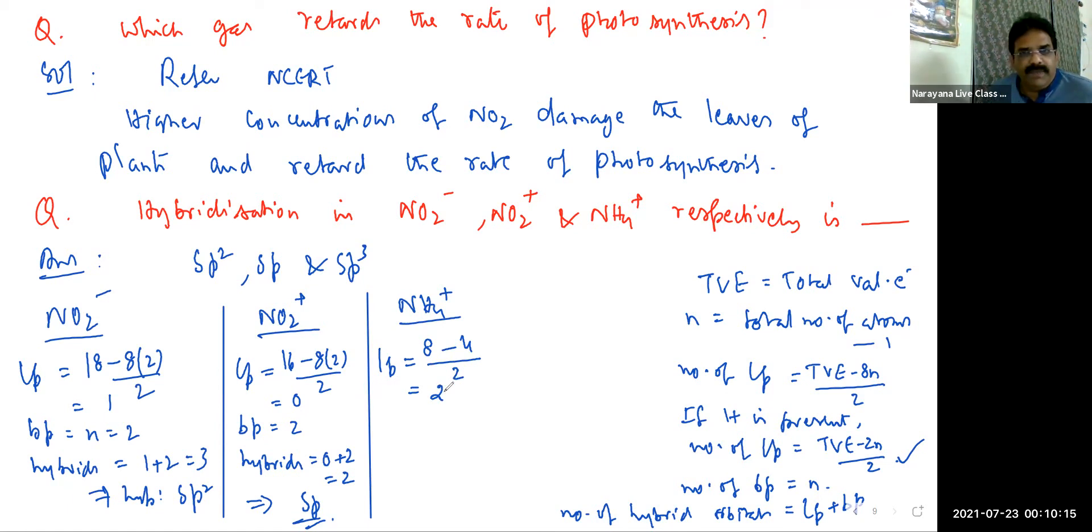One minute, wait. 5 plus 4, 9, 8, 8 minus 4, 4 by 2, okay. And bond pairs, bond pairs is equal to, just wait one minute. Total valency electrons, yes. Here total valency electrons 8 minus 2N, where N equals 4. So 2N means 2 into 4 means here I get 8. So I'm sorry, here you get 0. Now this is correct, lone pairs is 0.